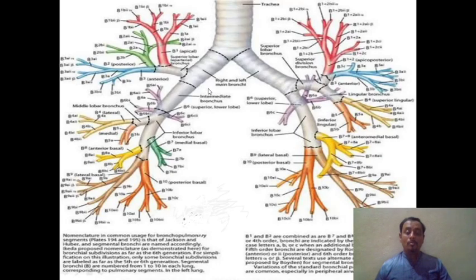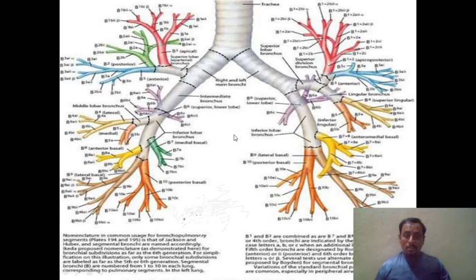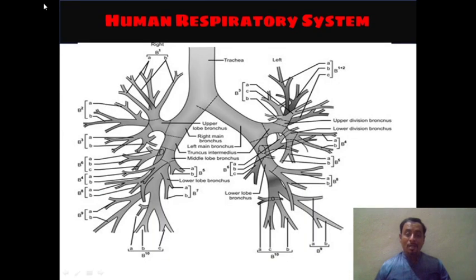The next diagram shows a very detailed view of the primary, secondary, and tertiary bronchi. If you are unable to see the small alphabets and numbers in the first diagram, let's go to the next diagram where you can easily see how these divisions occur.